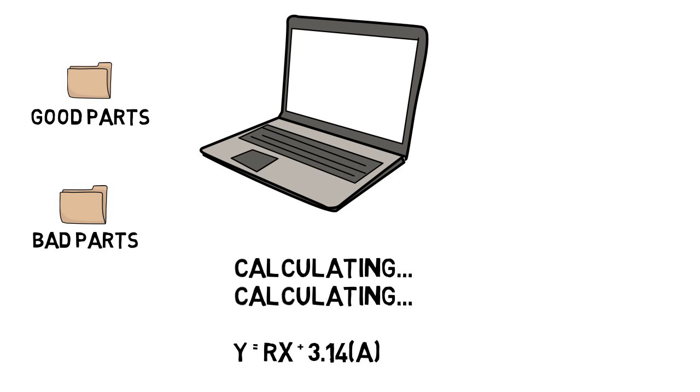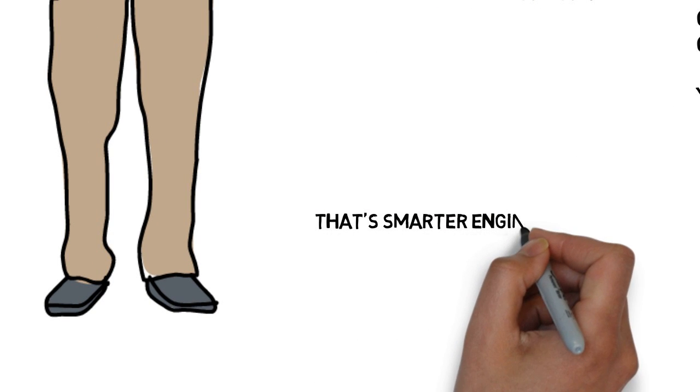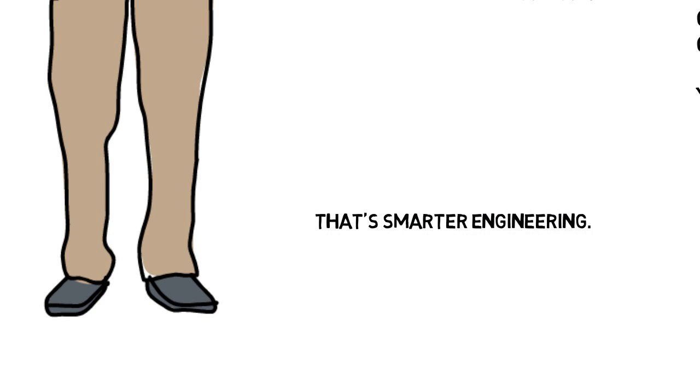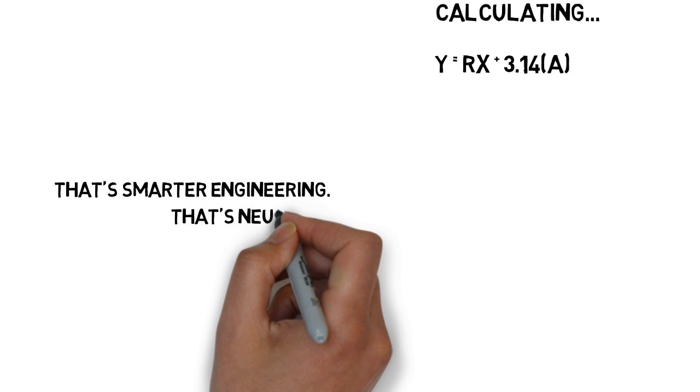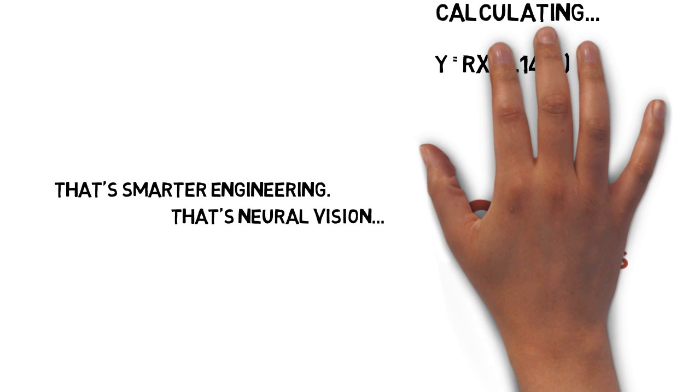Because Andy's computer is many times faster, he saves time and can go solve the next challenge. His company ships less bad parts, customers are happier, and the business grows. That's Neural Vision from Scythe Systems.